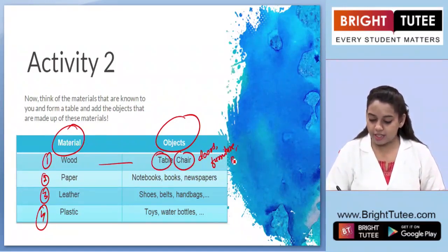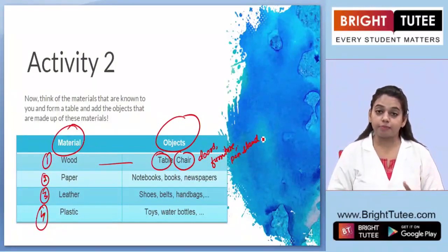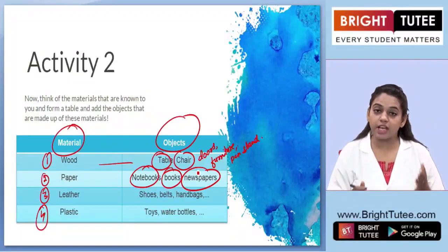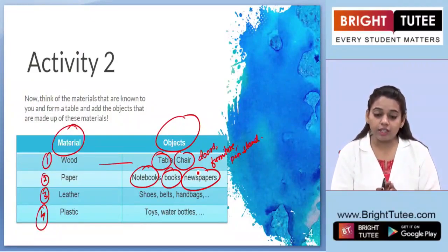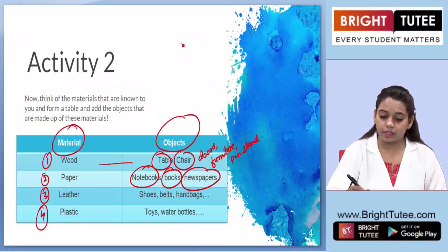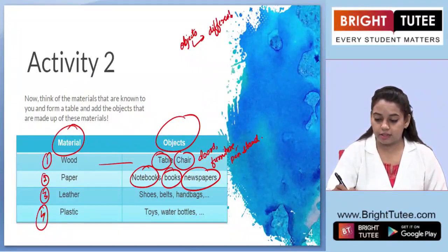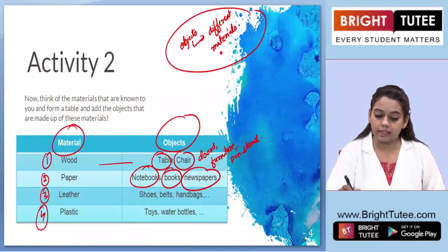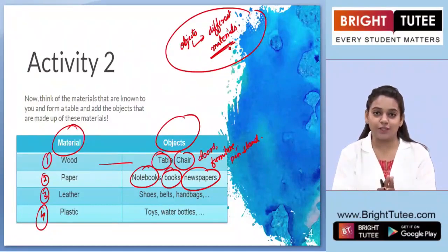For example, wood is used to make a table, chair, doors, furniture, or a pen stand. Paper is used to make notebooks, books, and other paper items around you. This is a real-life activity where you learn that different objects are made up of different materials. In both activities, we learned how to sort objects based on the materials used to make them. In our coming session, we will move ahead with this chapter. Thank you for your attention.